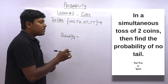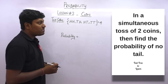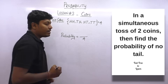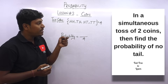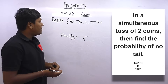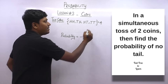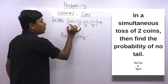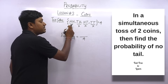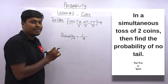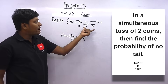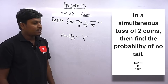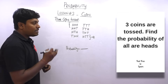Question 3: In a simultaneous toss of two coins, find the probability of no tail. Total possibility = 4. We eliminate all outcomes with tails — only one outcome (both heads) has no tail. So probability = 1/4.